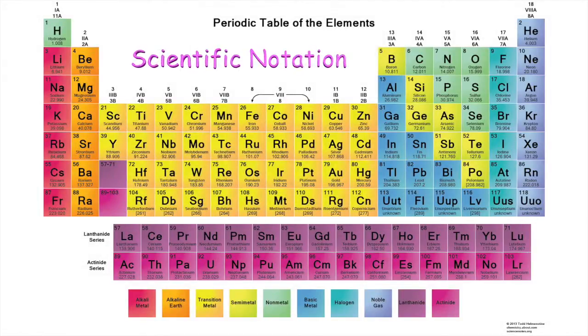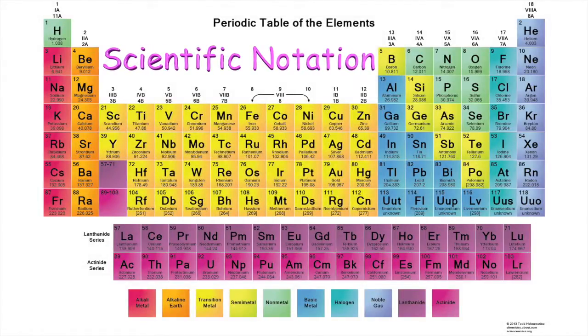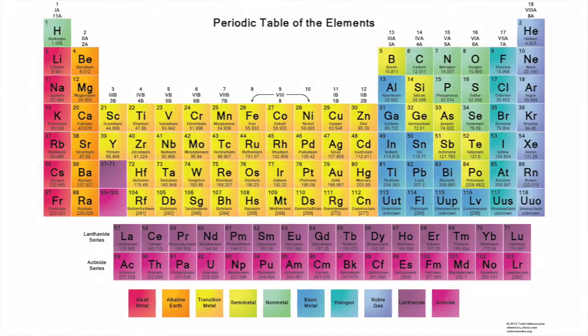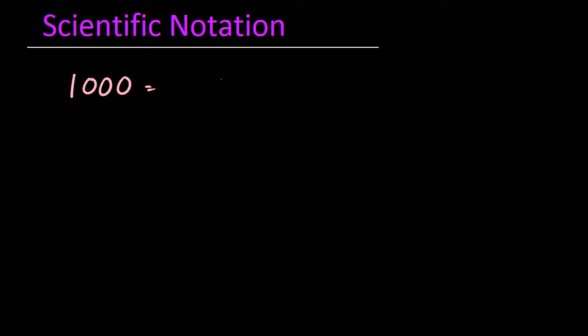This is an introduction to scientific notation. Let's start with the number 1,000. 1,000 may be written as 10 times 10 times 10, which is the same as writing it as 10 raised to the third power.